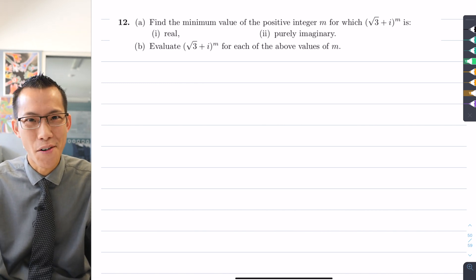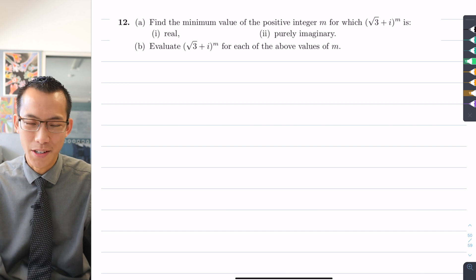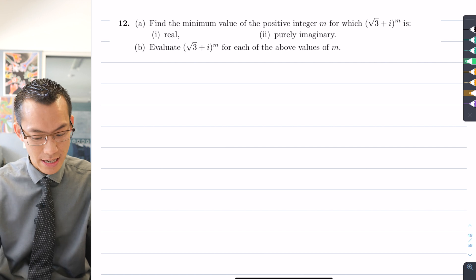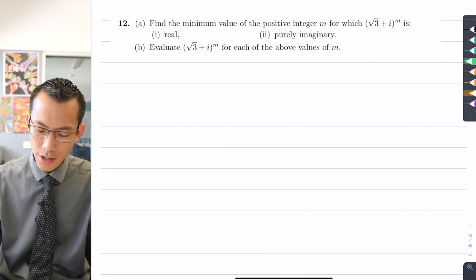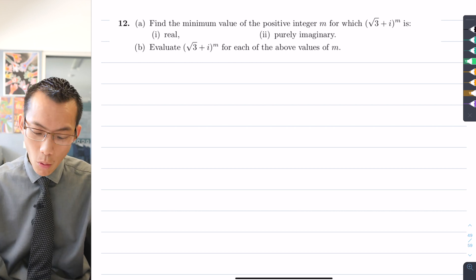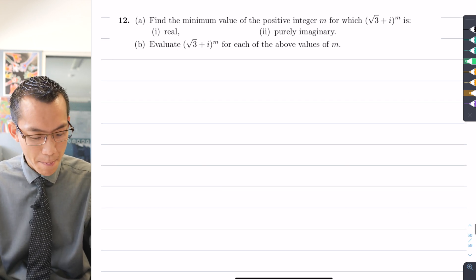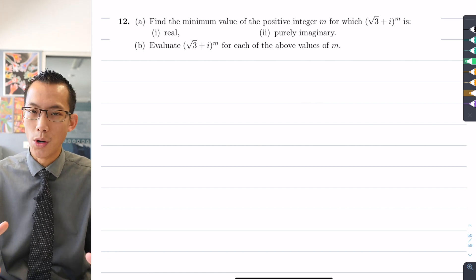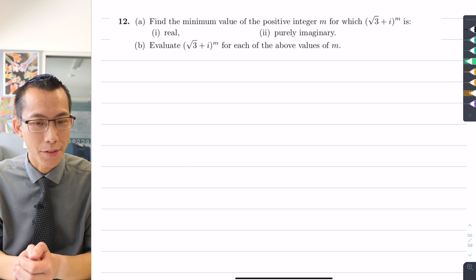This is a perfect example of that. Let's have a look at this and see how we can do it together. Find the minimum value of the positive integer m for which (√3 + i)^m is real or purely imaginary. Part b says evaluate (√3 + i)^m for those values of m that we're about to find.